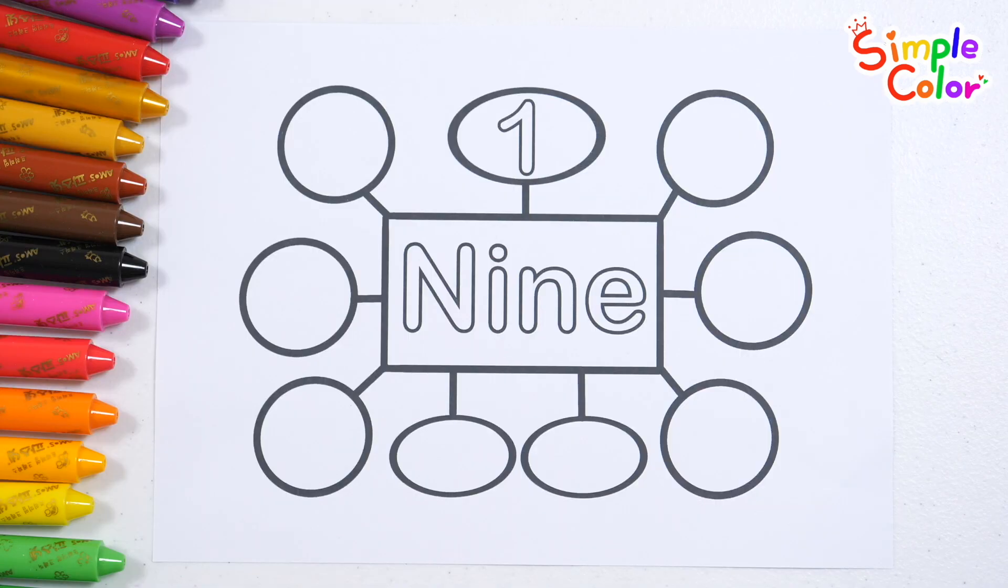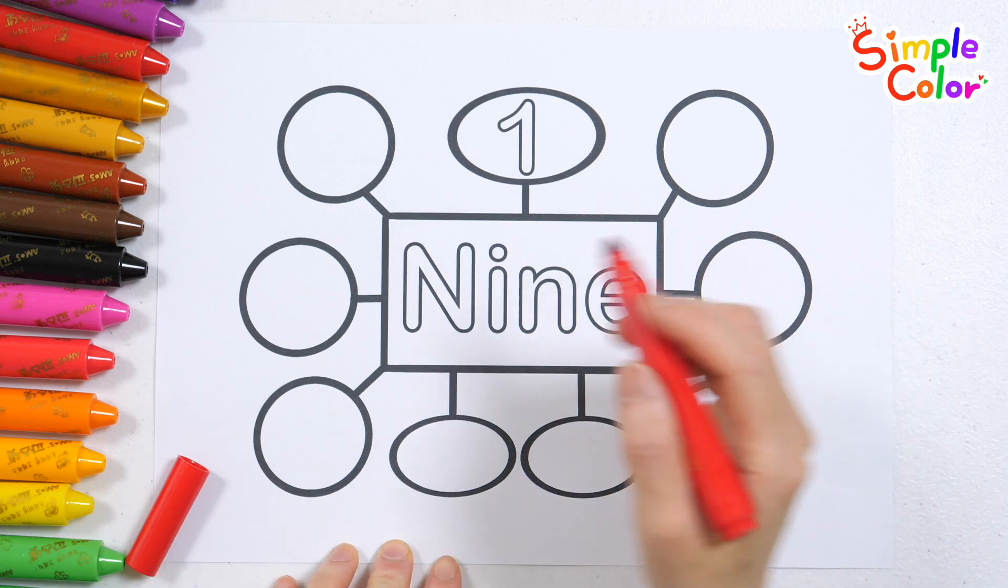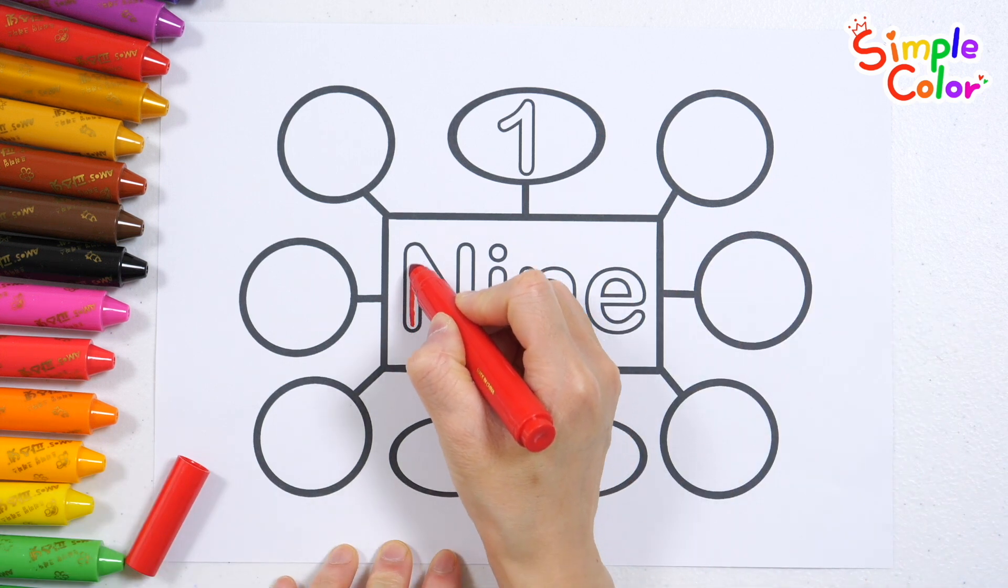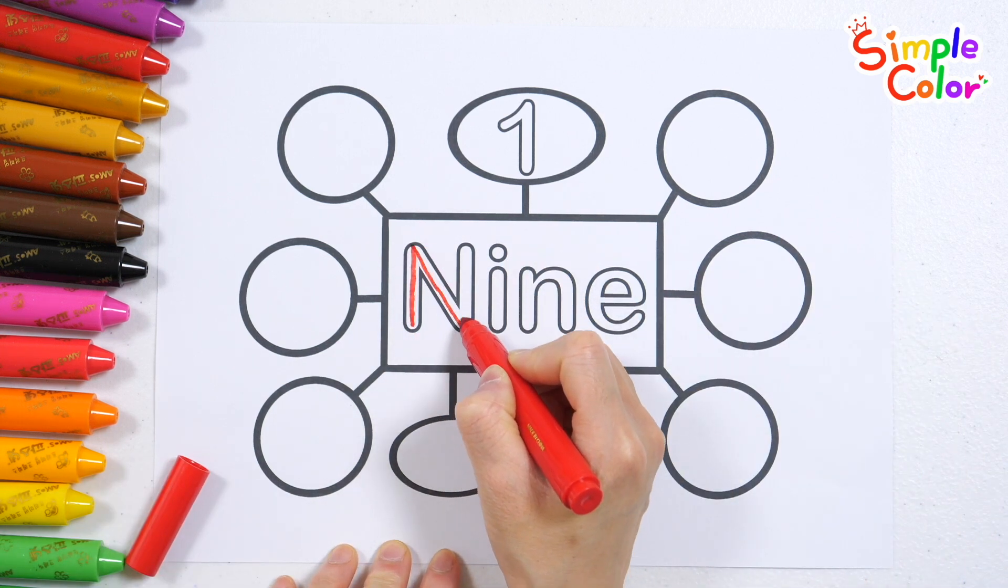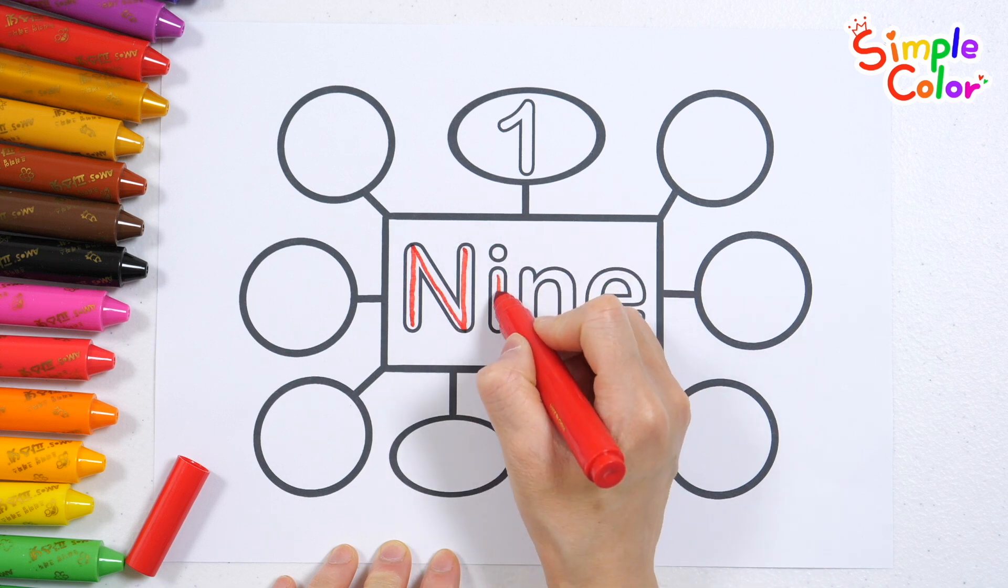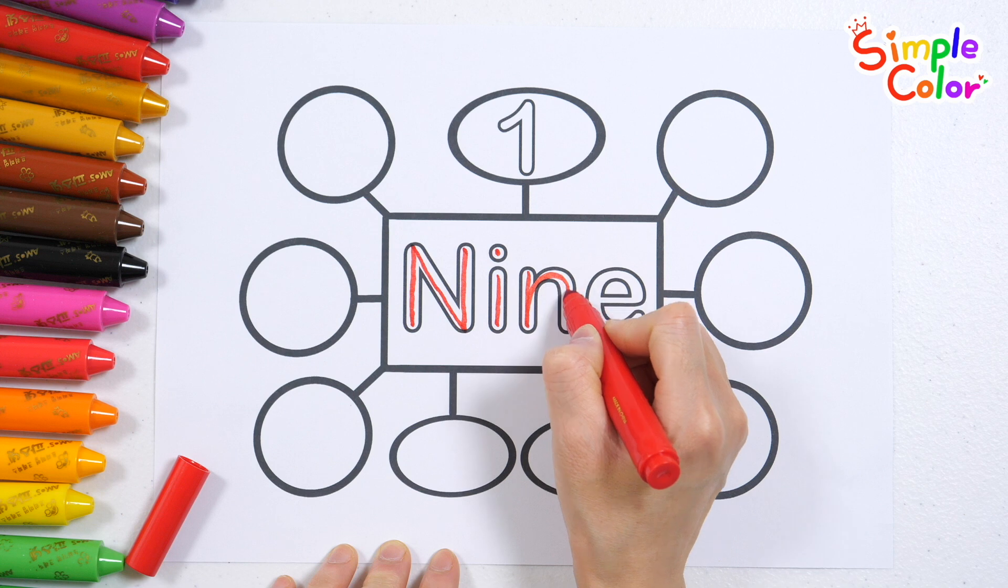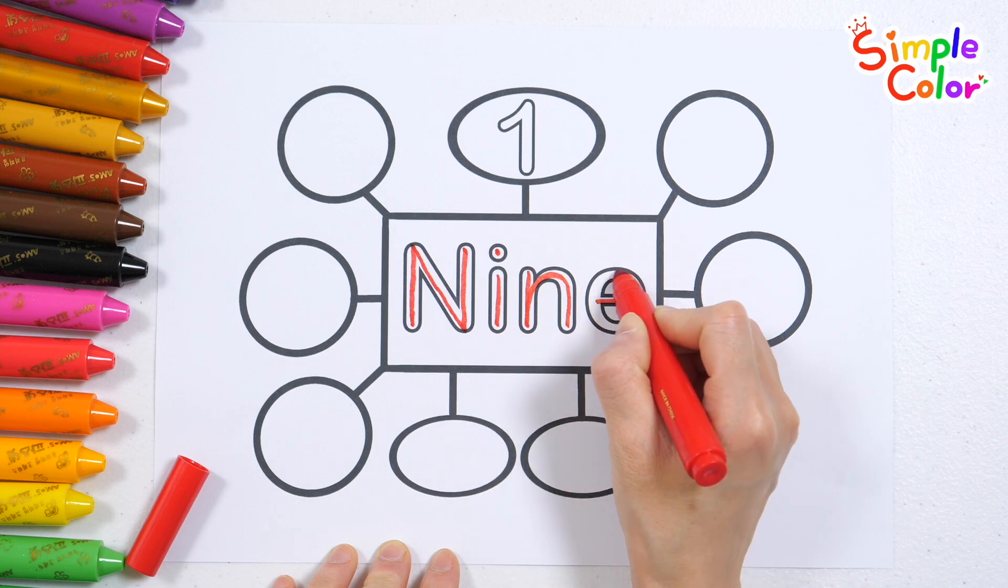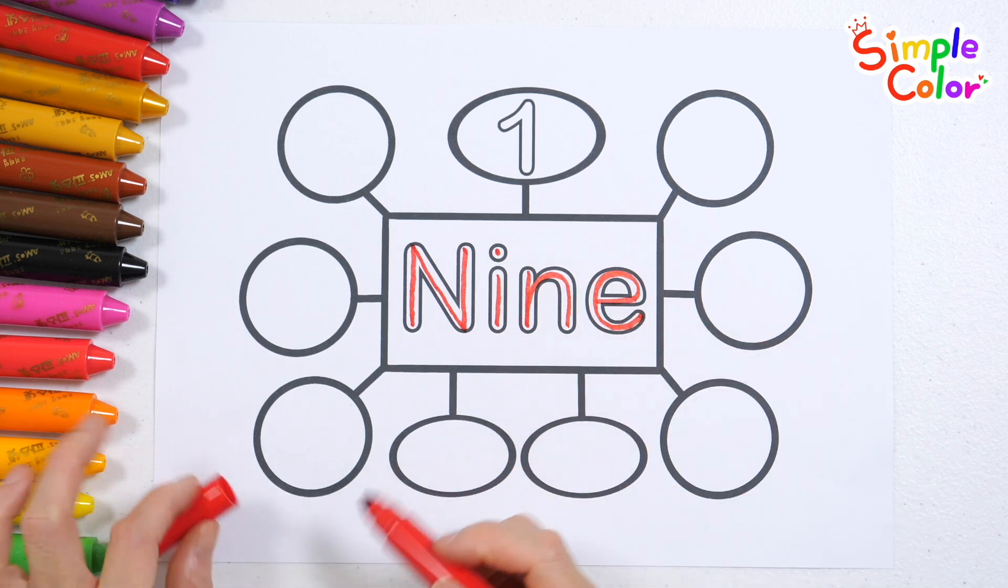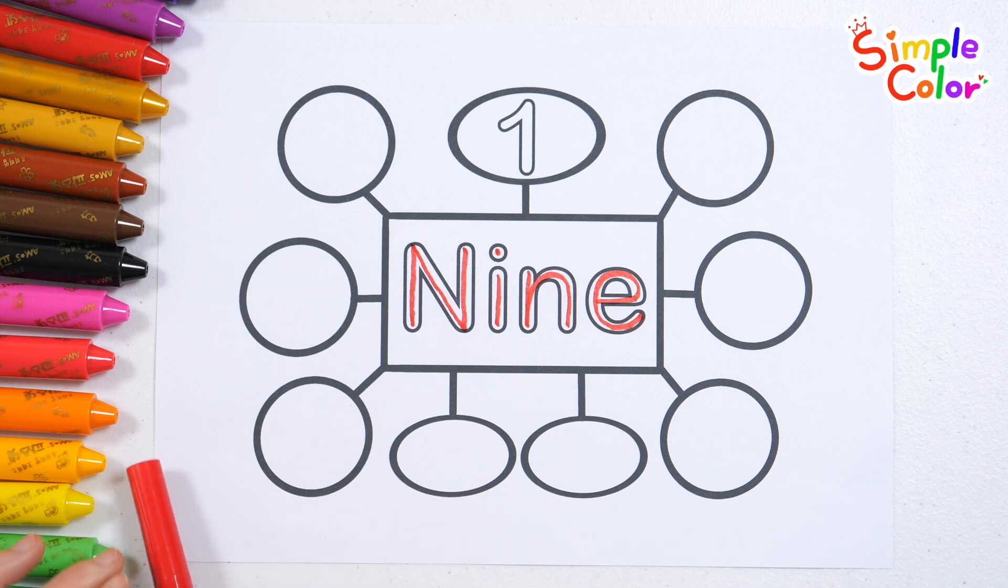Let's read and write the words written in the center and write the numbers in order in the circles. N, I, N, E, 9. Great job!